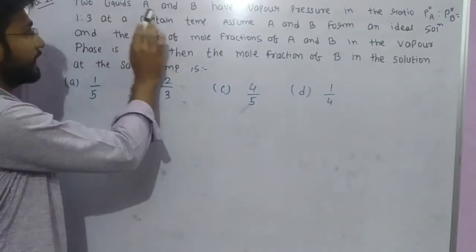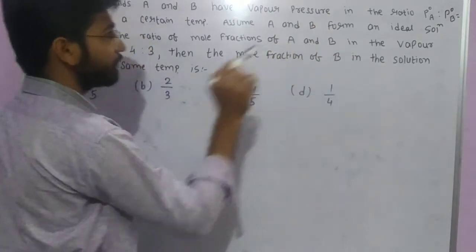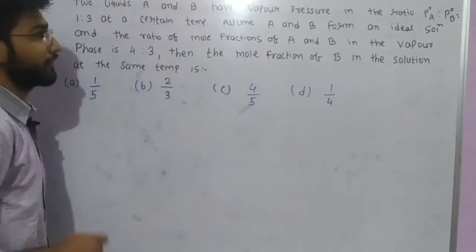Here is the question. Two liquids A and B have vapor pressure in the ratio P not A ratio P not B is 1 ratio 3 at a certain temperature.